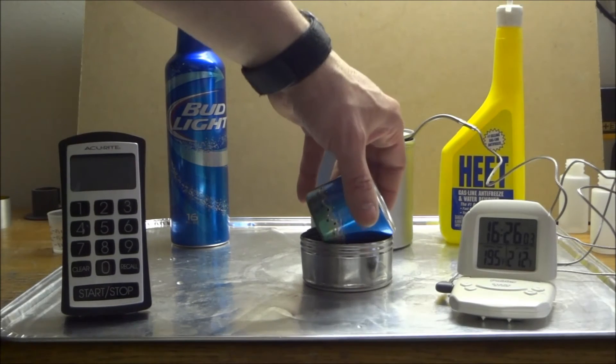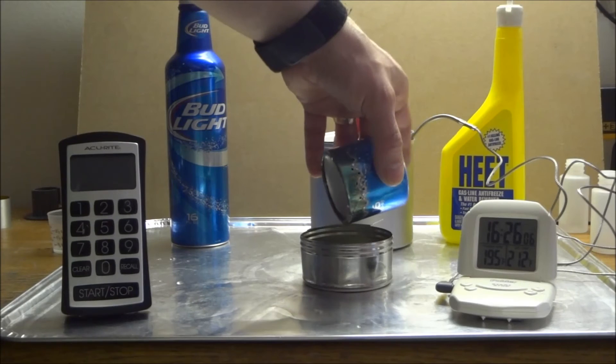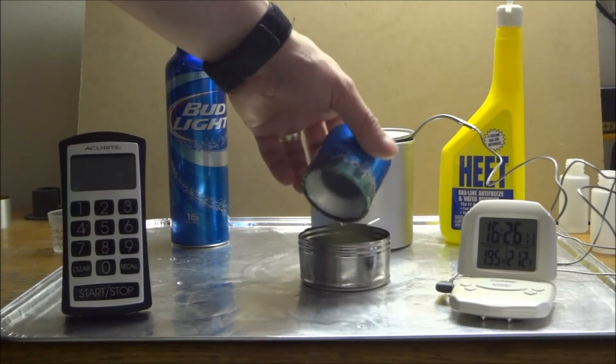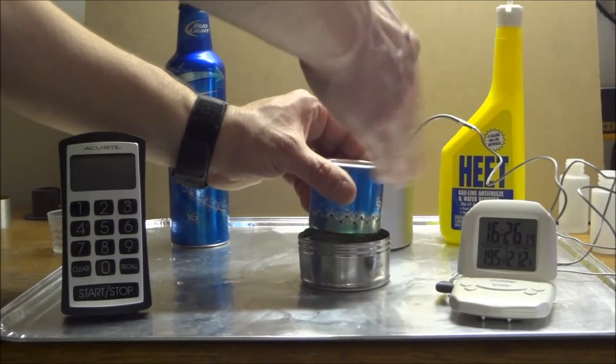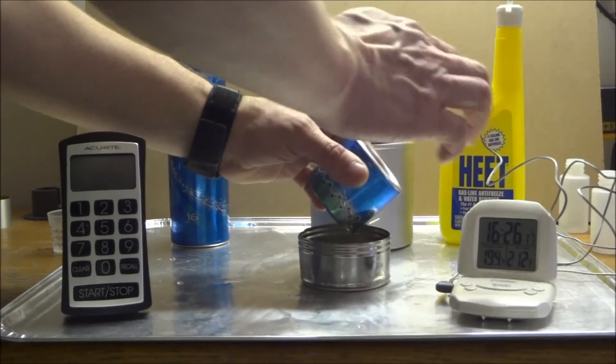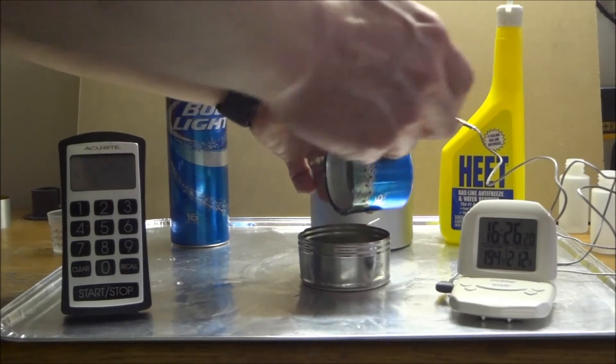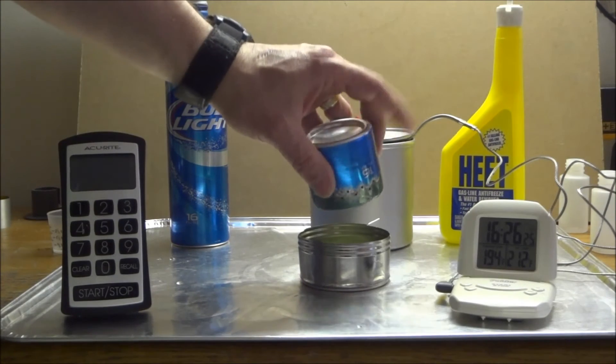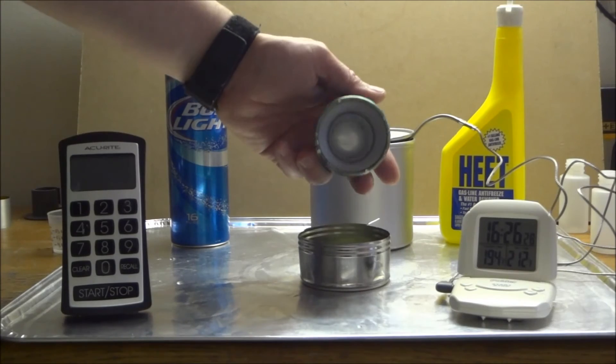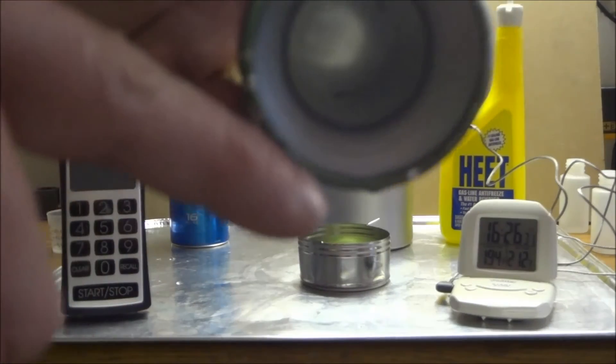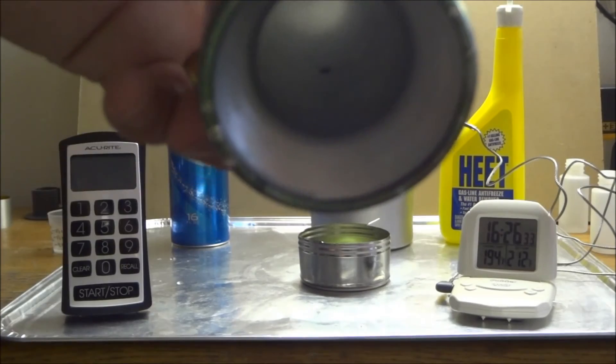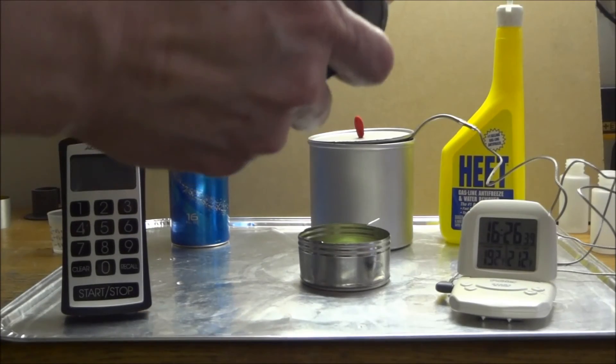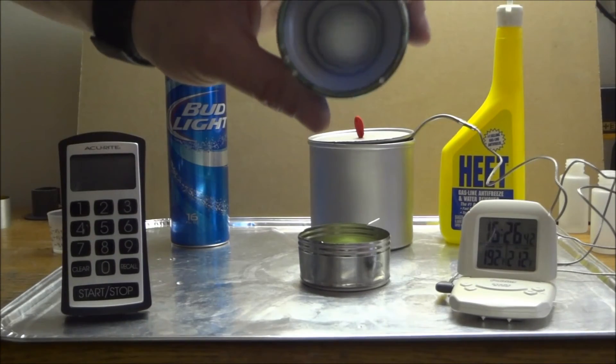All right, let's pour this off. Of course, you're not going to be able to get all the fuel out of the stove, but we'll get most of it. There's still some in the rim there. I think we got most of it. You can see there's still a little right in the rim there that doesn't want to come out.